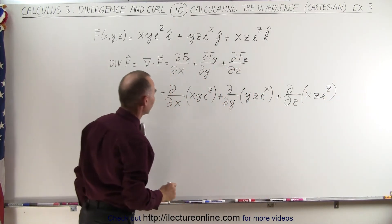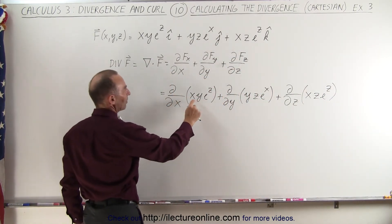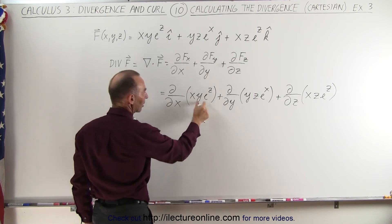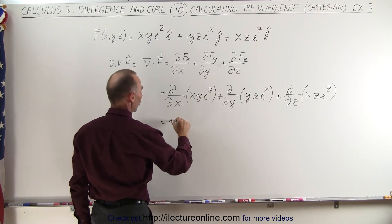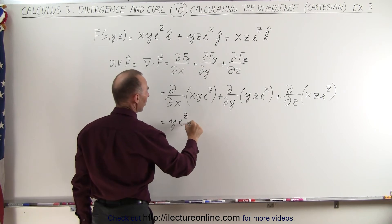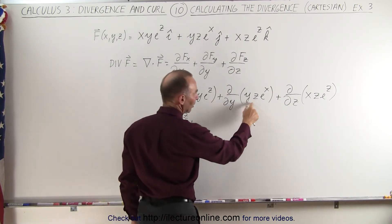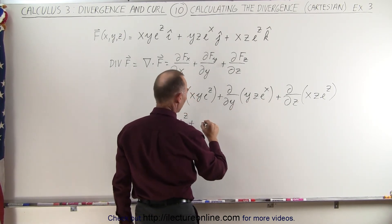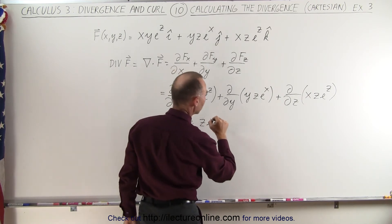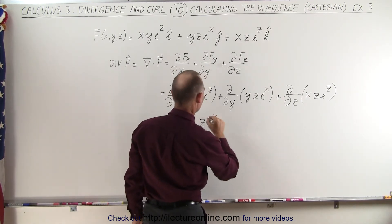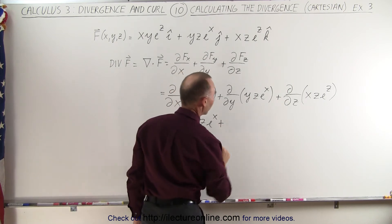The first one is relatively easy, because only x is the variable and the others are constants, so this becomes y·e^z. Plus, here the y is the variable and these are the constants, so this becomes z·e^x, and then plus...